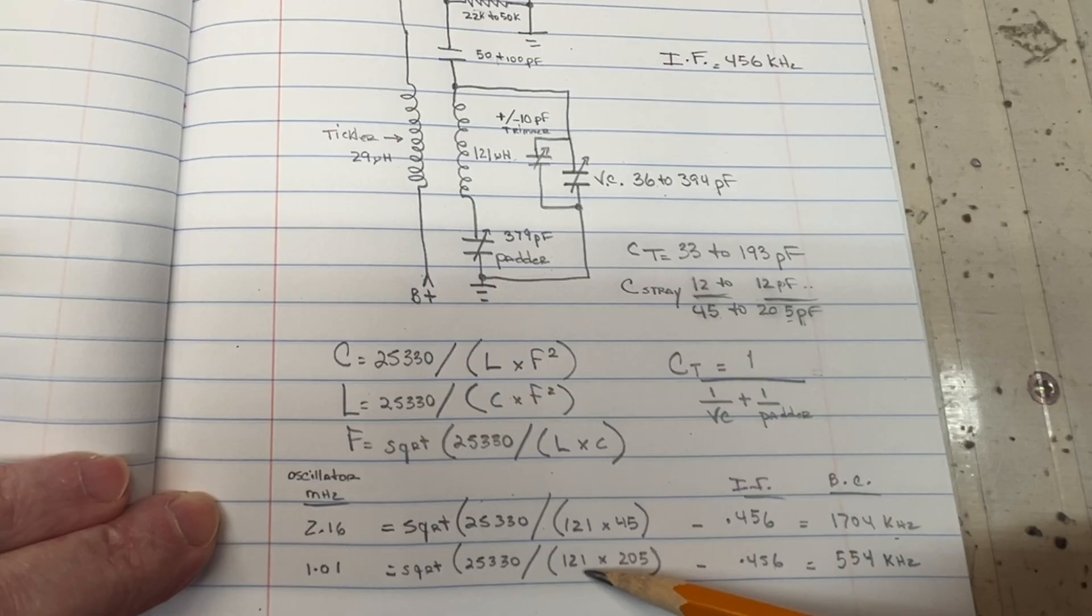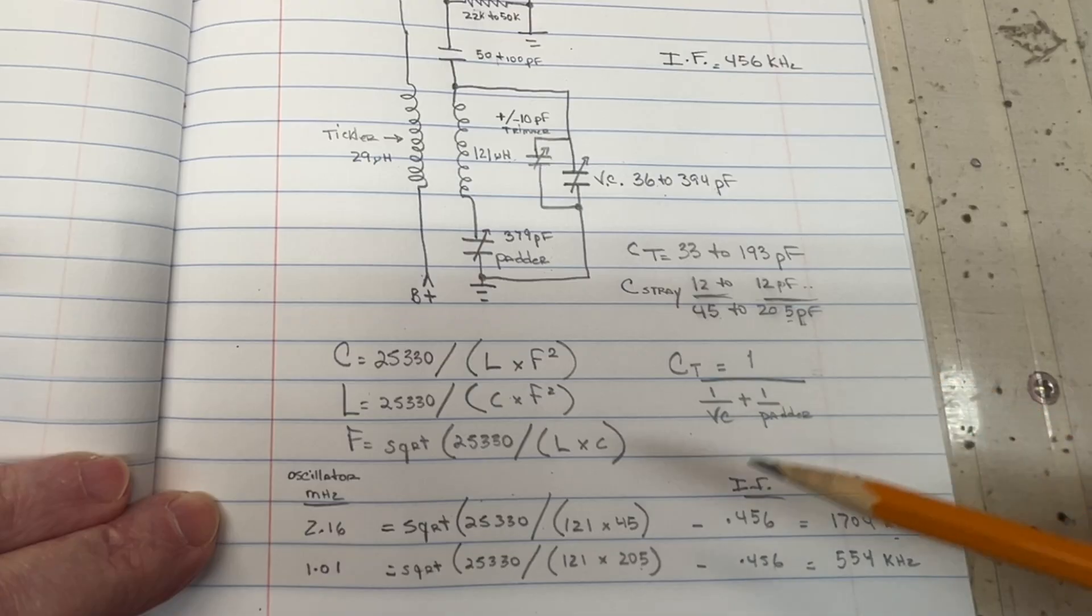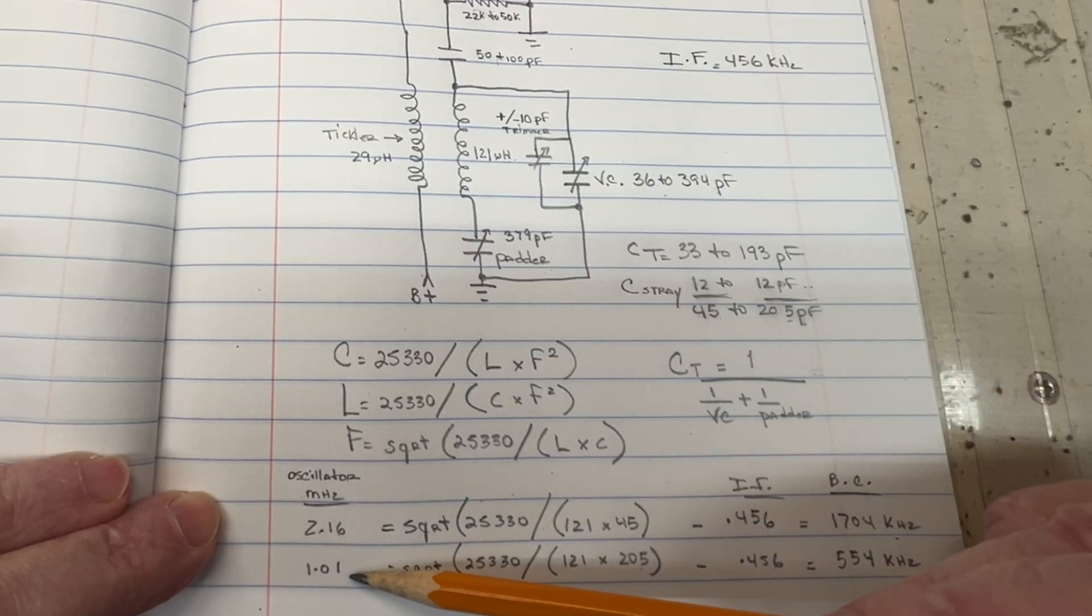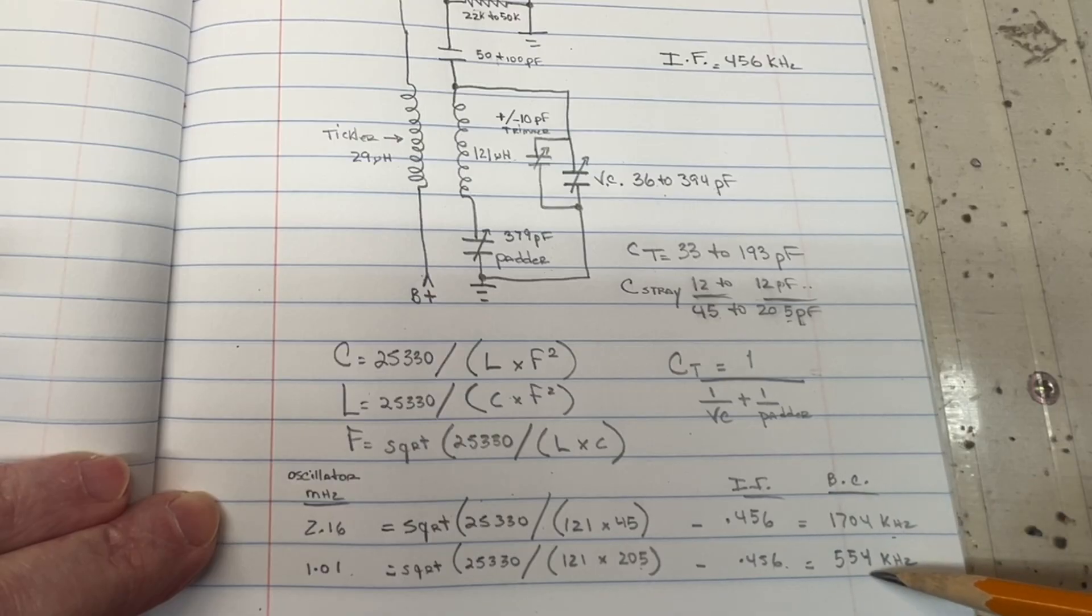Same process here for the lower part of the band, the 121 inductor times the 205 pF. Puts the oscillator just north of 1 megahertz, backing out the IF frequency at 456 kilohertz or 0.456 megahertz. It brings the low end of the broadcast band down to 554 kilohertz.